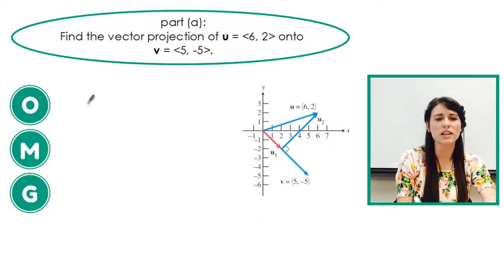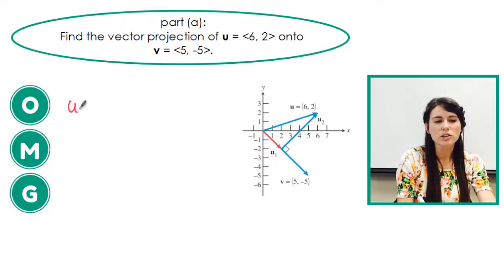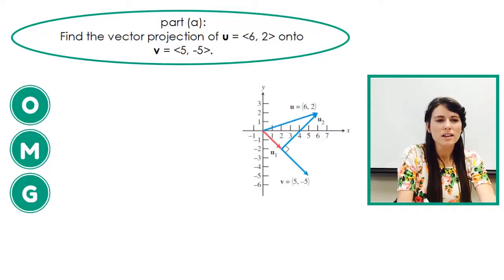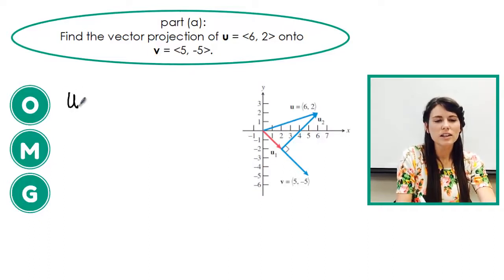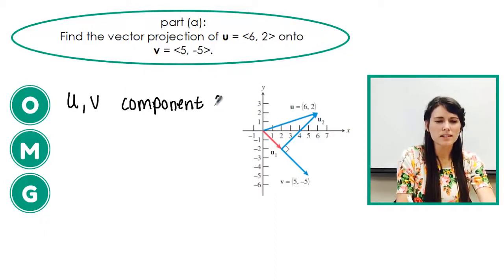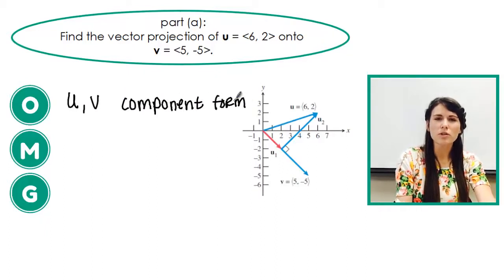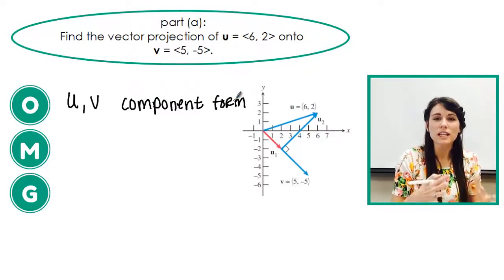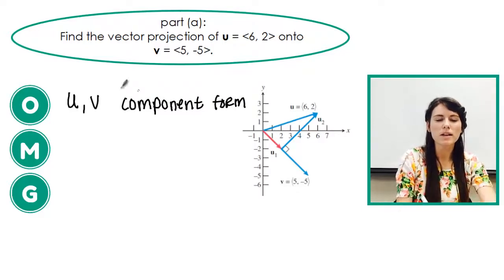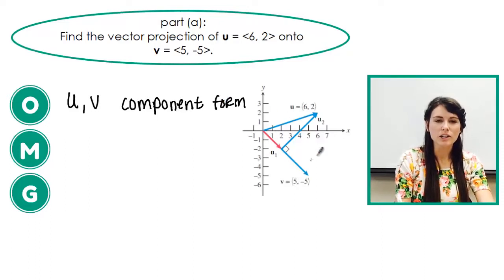So the first thing you want to observe in this is that you're given vectors u and v. And u and v are both in component form. I like to write that down because it's really important that you know what form you're in, so that you know if I'm in linear form or component form. So they're both in component form, that's pretty much it. And I have this diagram here kind of showing what this represents.